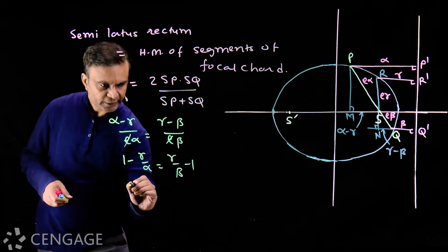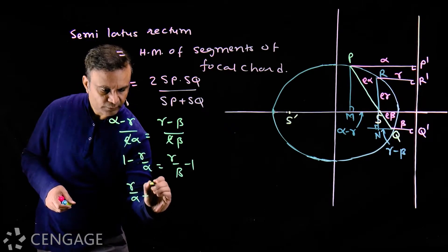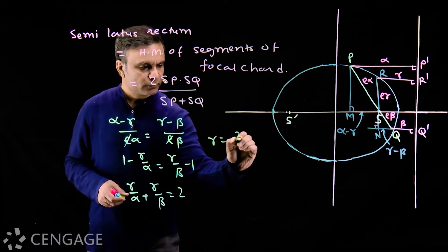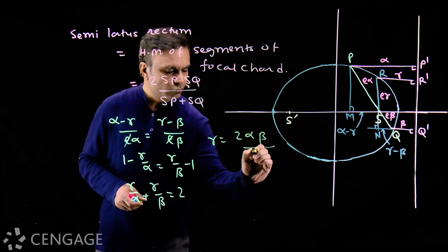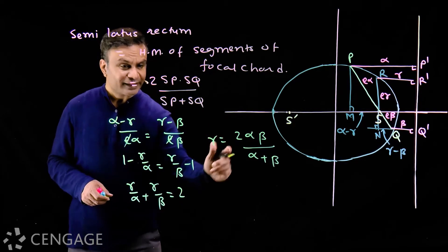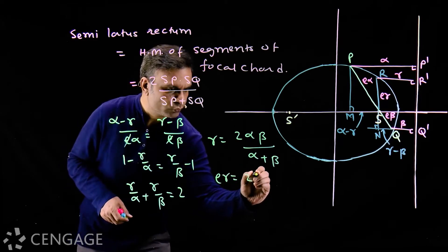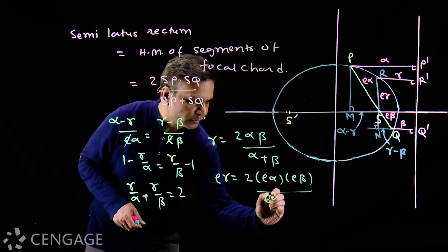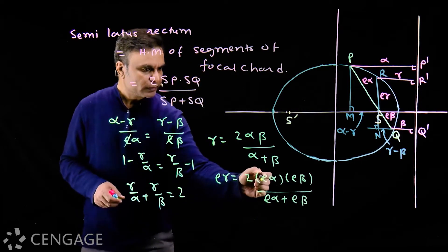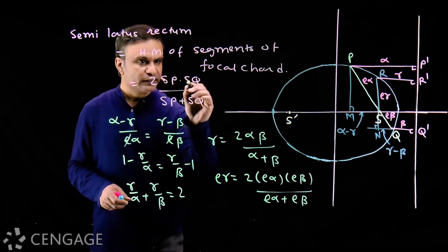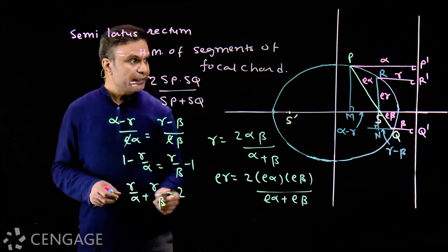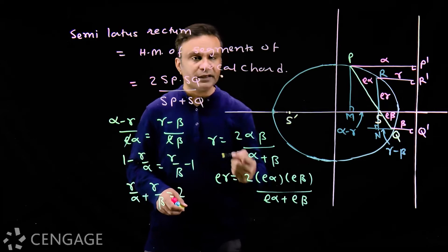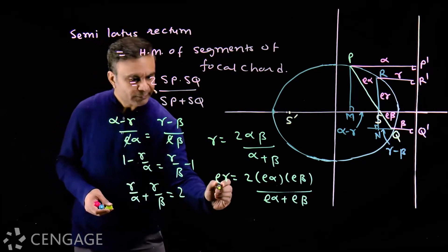From this we get gamma/alpha plus gamma/beta equals two, so gamma equals two·alpha·beta over (alpha plus beta). Multiplying both sides by e: e·gamma equals two times e·alpha times e·beta over (e·alpha plus e·beta). Here e·alpha is SP, e·beta is SQ, and e·gamma is the semi latus rectum, since SR is half the latus rectum. So we have proved that the semi latus rectum is the harmonic mean of the segments SP and SQ of the focal chord.